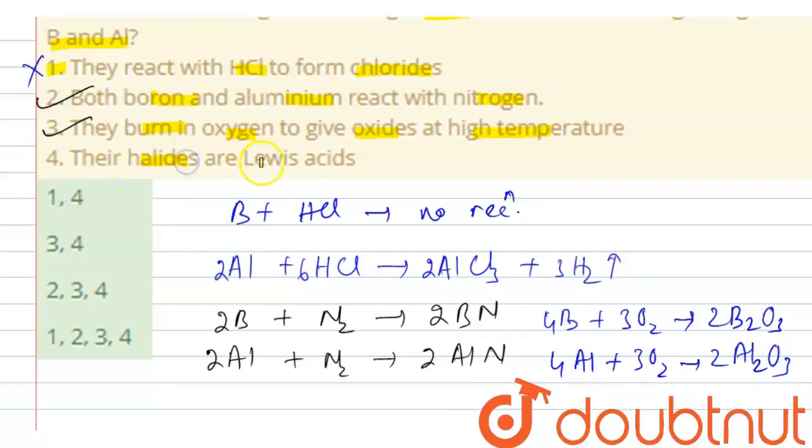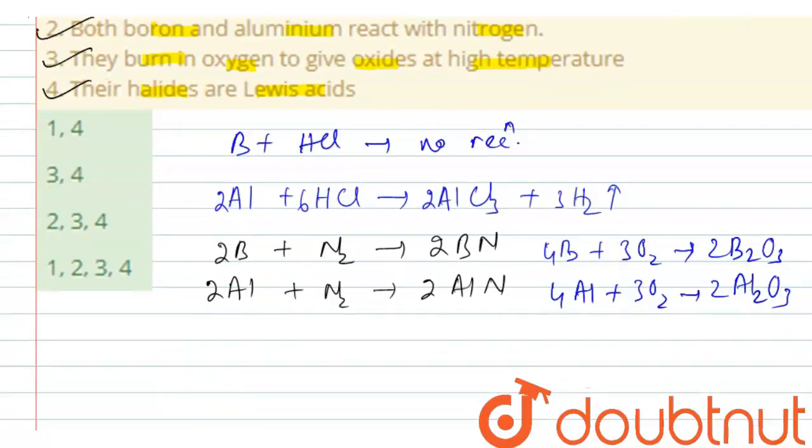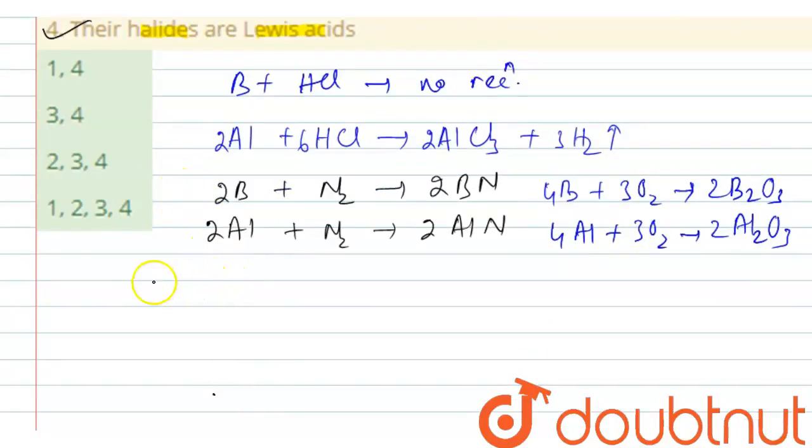Their halides are Lewis acids because they are electron deficient compounds. Boron and aluminium halides are both electron deficient because of the presence of only 6 electrons in them.